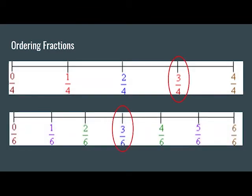So here we have on the first one a zero, then this next mark is one by four, then two by four, then three by four, and finally four by four, which by the way is the same as one.